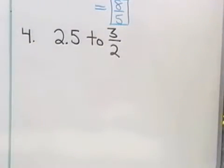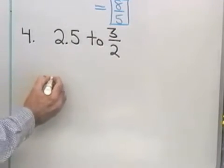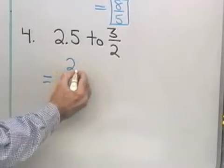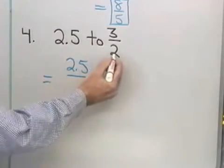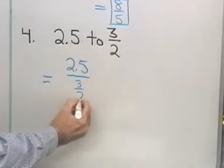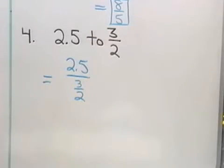Here's our next one. How about 2.5 to 3 halves? Here I have a decimal and a fraction, but still, the first number goes in the numerator and the second number goes in the denominator. So it's 2.5 over 3 halves. Let's simplify that.